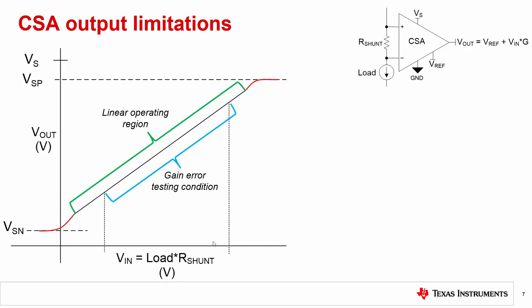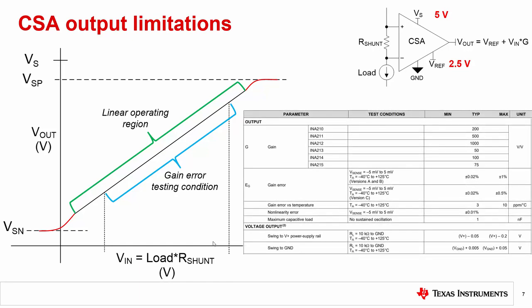Let's examine the INA210 as an example for determining linear output region. We will assume a 5 volt supply and a 2.5 volt reference voltage. If we examine the datasheet's electrical characteristics table, we can fill in the chart. For the swing to rail specifications, we see 50 millivolts for the swing to ground and VS-200 millivolts for the swing to positive rail, which translates to a 4.8 volt Vout limit for the 5 volt supply rail.